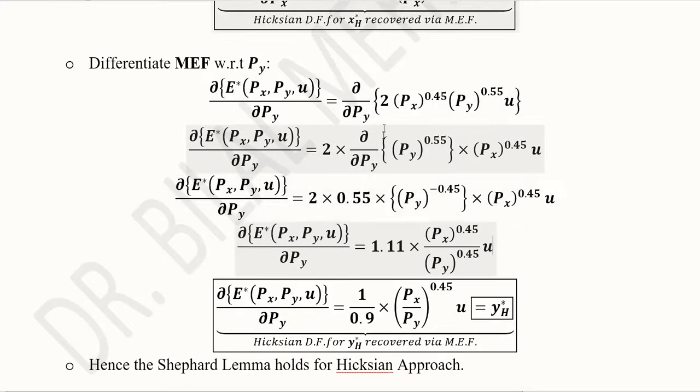Now, py should be treated as a variable. So, it is kept here with the derivative operator and px and u get treated as constant. So, they remain outside the derivative term. So, it is 2 here, it is 2 here and here we are going to apply the power rule.